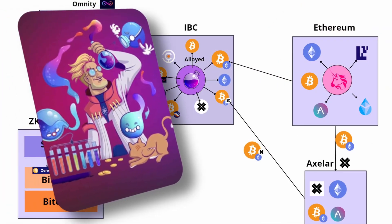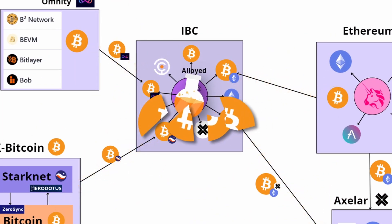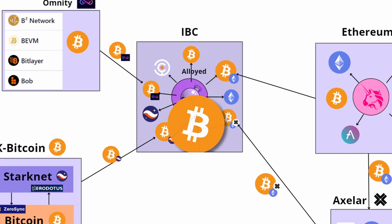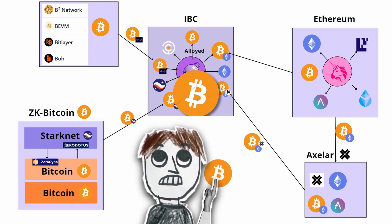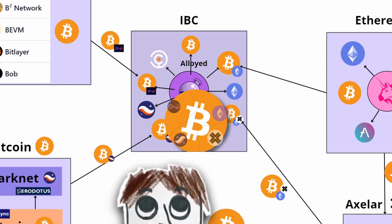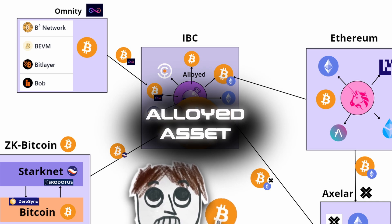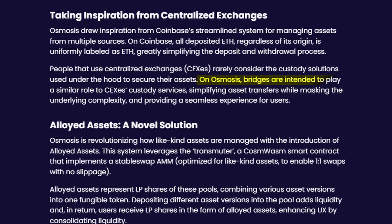The lab has devised a potion that can merge different fluids as long as the DNA is identical, offering new liquidity considered the native or canonical asset of Osmosis. A client requesting a BTC solution will be served from this potion containing NBTC, WBTC, CKBTC, WBTC.axl, etc. This solution is called the Alloyed Asset. This Alloyed BTC is less sensitive to bridge hacks by diversifying its origin and provides a better user experience by operating like centralized exchanges — Binance does not specify the source of the asset.